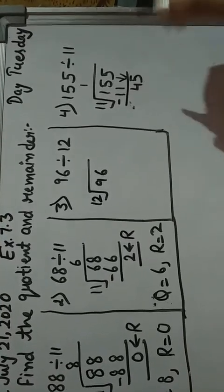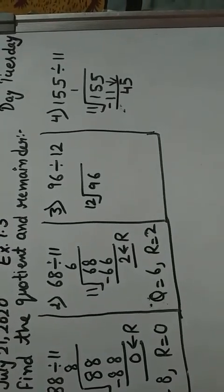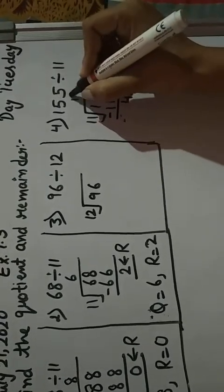11 ones are 11, 11 twos are 22, 11 threes are 33, 11 fours are 44.